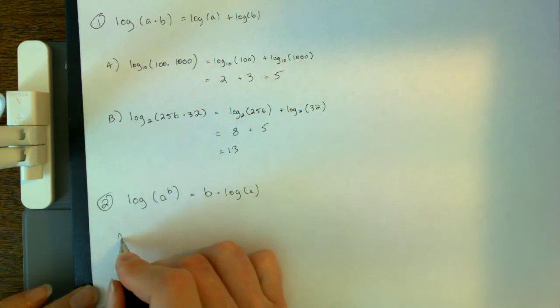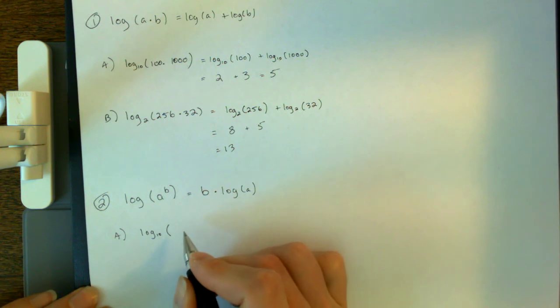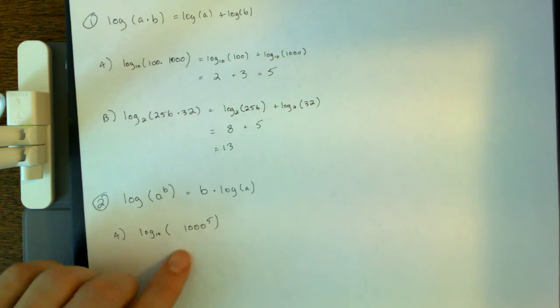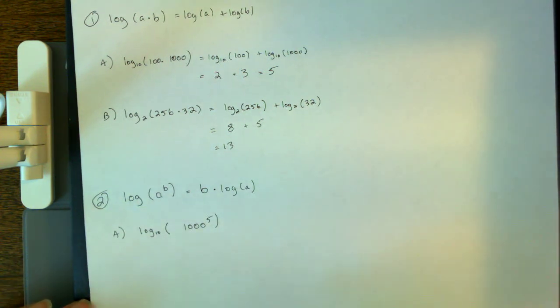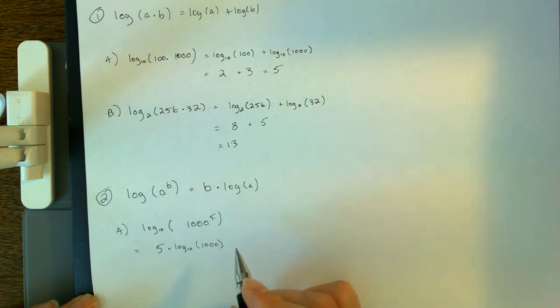So let's try an example here. Example a. Let's try this. Let's try log base 10 of 1,000 to the power 5. That's a big number, right? 1,000 to the power 5 is a very large number. Well, we can apply our rules right here. This is the same thing, as I've got, this is my a, and this is my b. So this is equal to 5 times log base 10 of 1,000. And this is log base 10 of 1,000. Well, that number is 3 because 10 to the third power equals 1,000. This is 5 times 3. And the answer is 15.